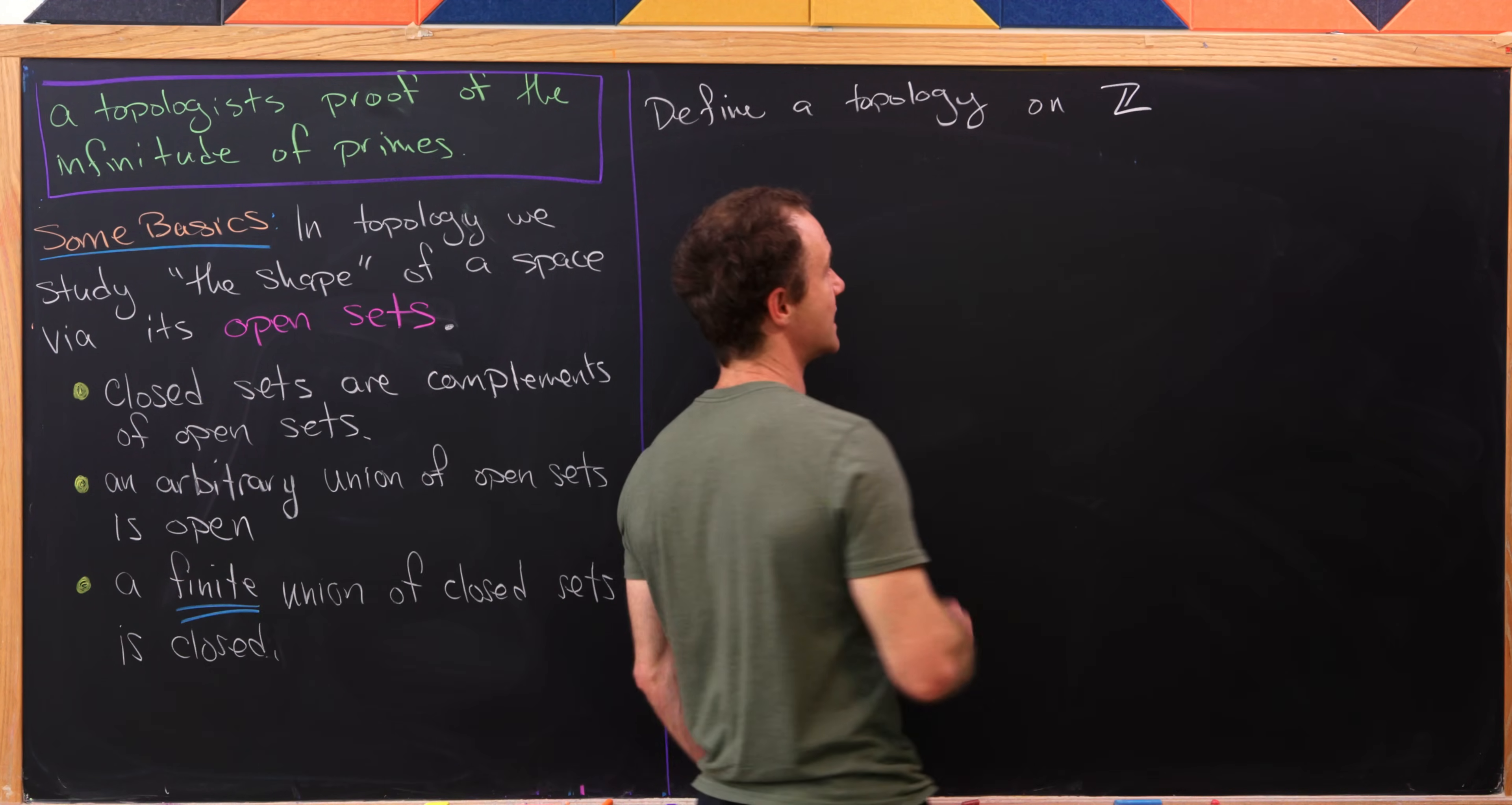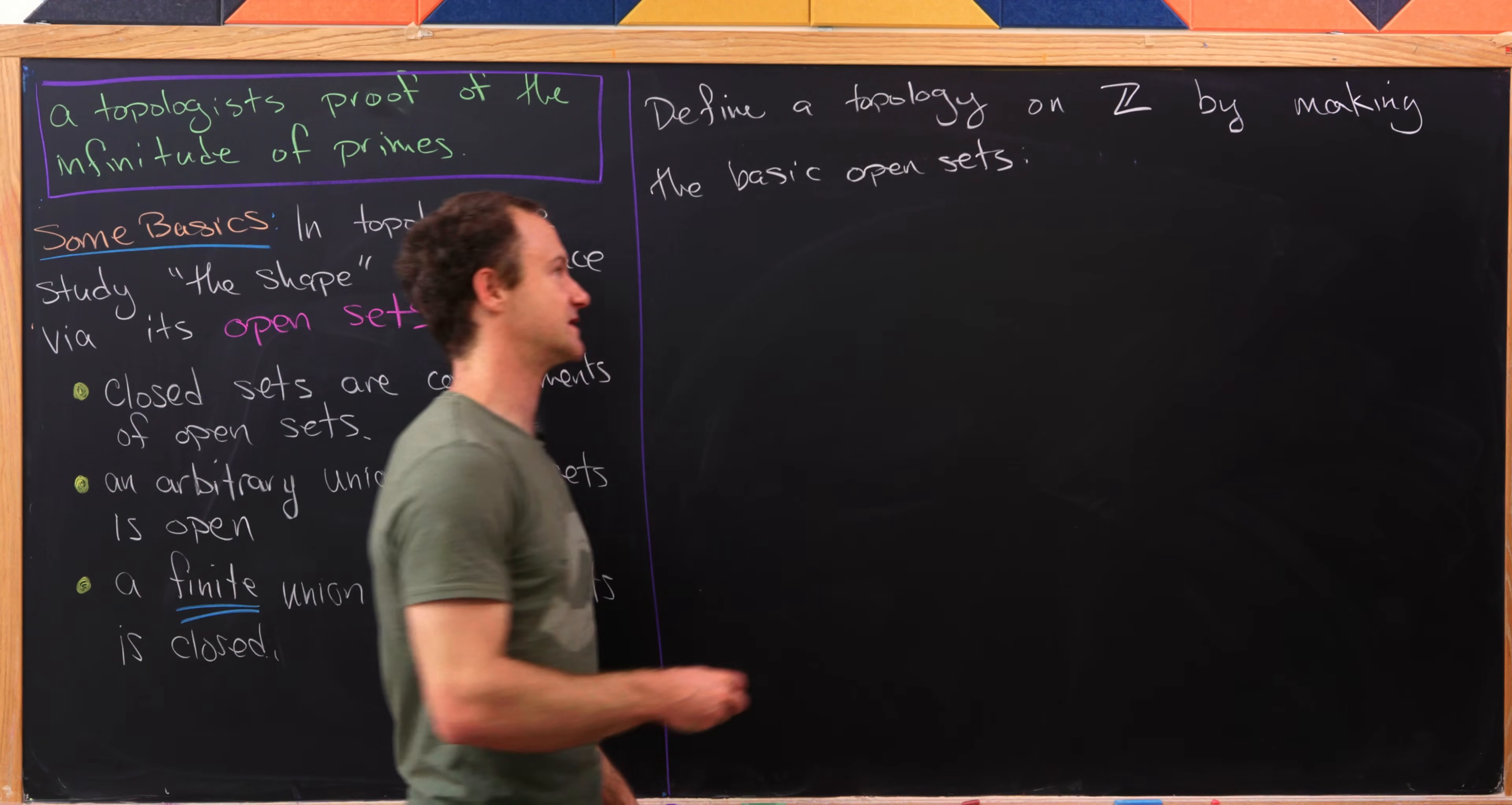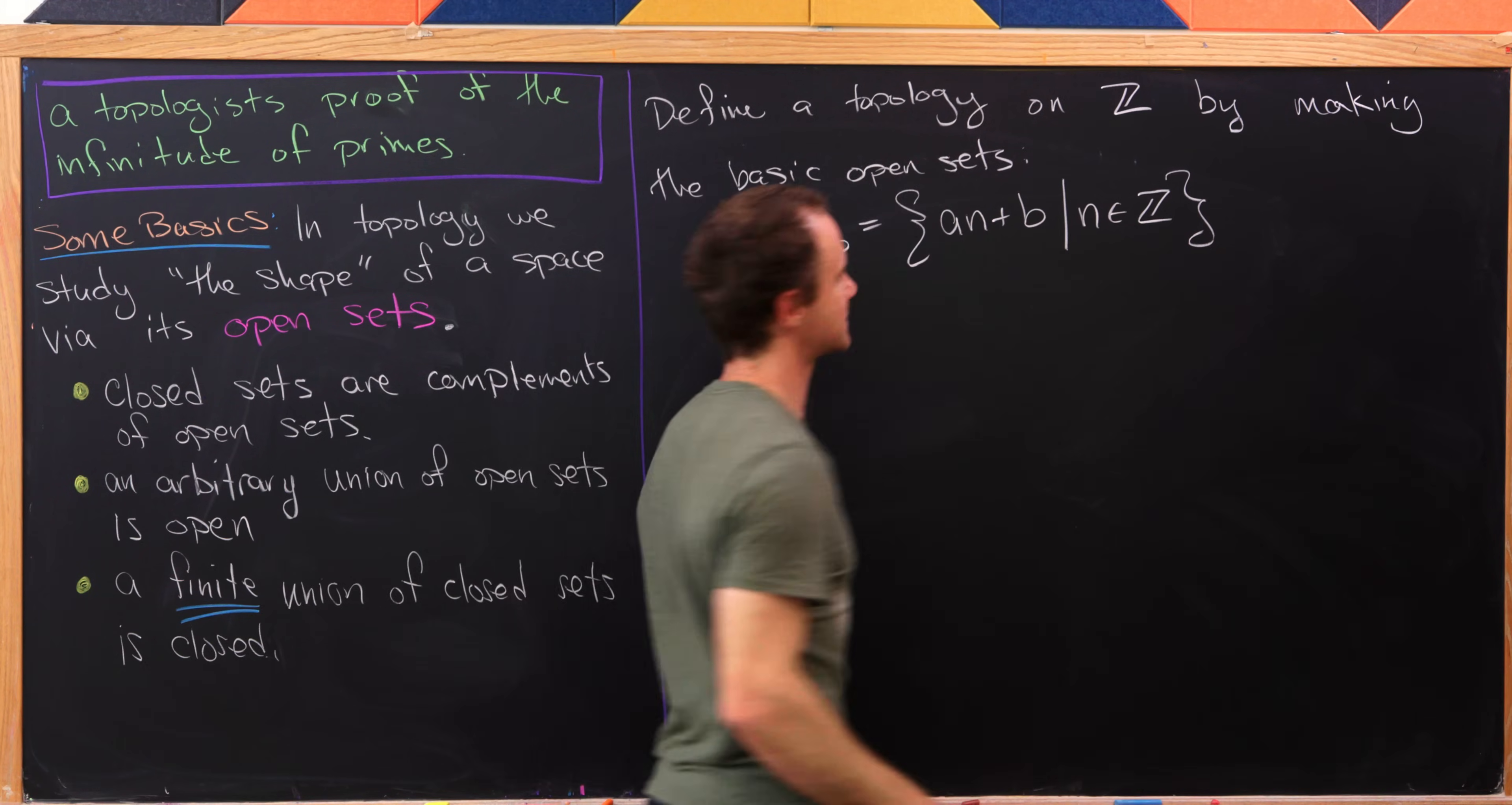Okay. So anyway, so on Z, by making, I'll say, the basic open sets. And this has a technical term of being the basis for a topology. Okay. Back to this. So our basic open sets on Z will be arithmetic sequences. And I'll use the following notation. So I'll use A sub a, b, and this will be the following arithmetic sequence. So it'll be an plus b as n ranges over all integers.